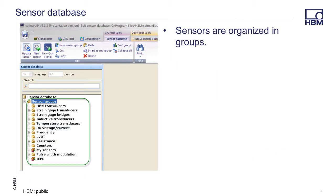The sensor database is arranged in two groups. The groups are: HBM transducers, strain gauge transducers, strain gauge bridges, inductive transducers, temperature transducers, DC voltage, frequency, LVDT, resistance, counters, my sensors, pulse width modulation, and IEP. New groups can be added to any of the existing groups, and it is also possible to create subgroups. It is recommended to create all new groups and sensors in the My Sensors group.